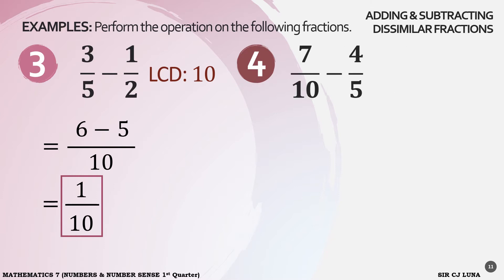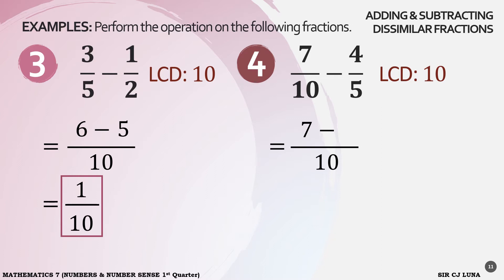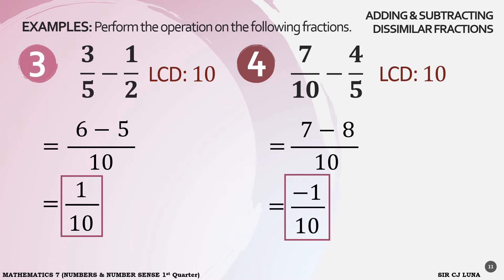Number 4: 7 over 10 minus 4 over 5. The LCD is 10. Now our denominator is 10. 10 divided by 10 is 1, times 7 is still 7. Minus: 10 divided by 5 is 2; 2 times 4 equals 8. What is 7 minus 8? It's negative 1, over 10. And that's our answer. So ganun lang ang pag-add at pag-subtract ng mga similar or dissimilar fractions.